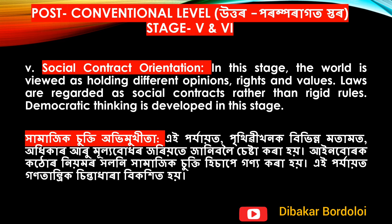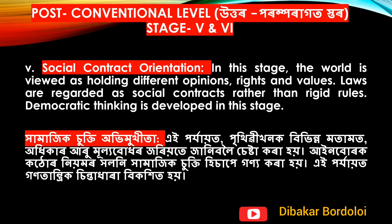The post-conventional level includes stage 5 and stage 6. Stage 5 is social contract orientation. In this stage, the world is viewed as holding different opinions, rights, and values. Laws are regarded as social contracts rather than rigid rules. Democratic thinking is developed in this stage.